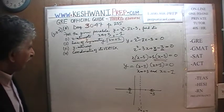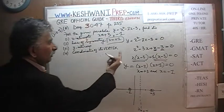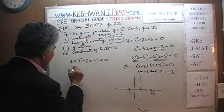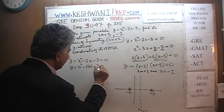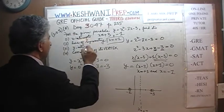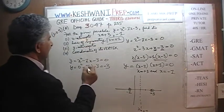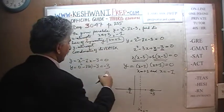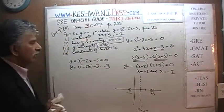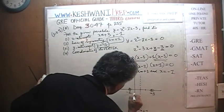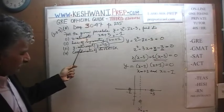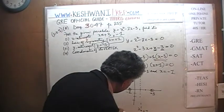Let's find the Y-intercept. The Y-intercept is when X is equal to 0, which is very simple. Here is our equation: X squared minus 2X minus 3. When we put X = 0, Y is simply 0 squared minus 2 times 0 minus 3, which is simply negative 3. So the Y-intercept is Y = negative 3.